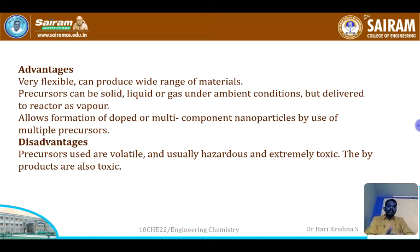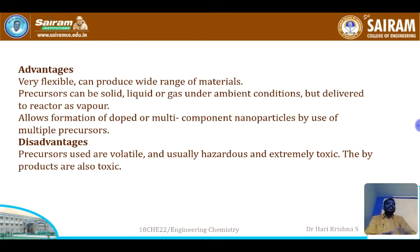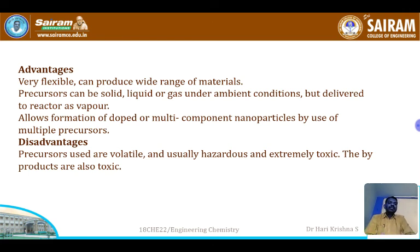In the chemical vapor condensation method, the main advantage is that the precursor can be solid, liquid, or gas — it will be converted to gaseous state inside the reactor. It also allows formation of doped or multi-component nanoparticles by use of multiple precursors. The disadvantage is that the precursors used are often volatile and usually hazardous or extremely toxic. In this course, we only cover the processes briefly — the sol-gel method, precipitation method, and chemical vapor condensation method — with one example each, without going into great depth.